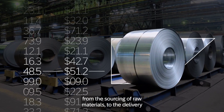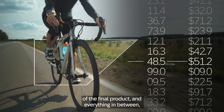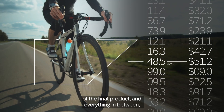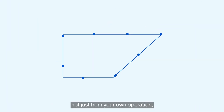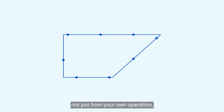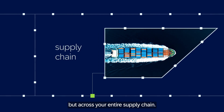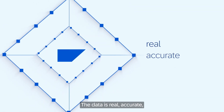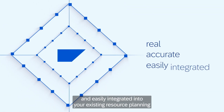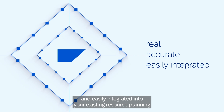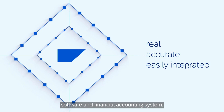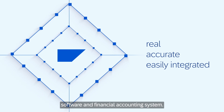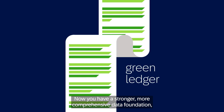From the sourcing of raw materials to the delivery of the final product and everything in between — not just from your own operations, but across your entire supply chain. The data is real, accurate, and easily integrated into your existing resource planning software and financial accounting system. Now you have a stronger, more comprehensive data foundation and you're ready to reap the benefits of a green ledger.